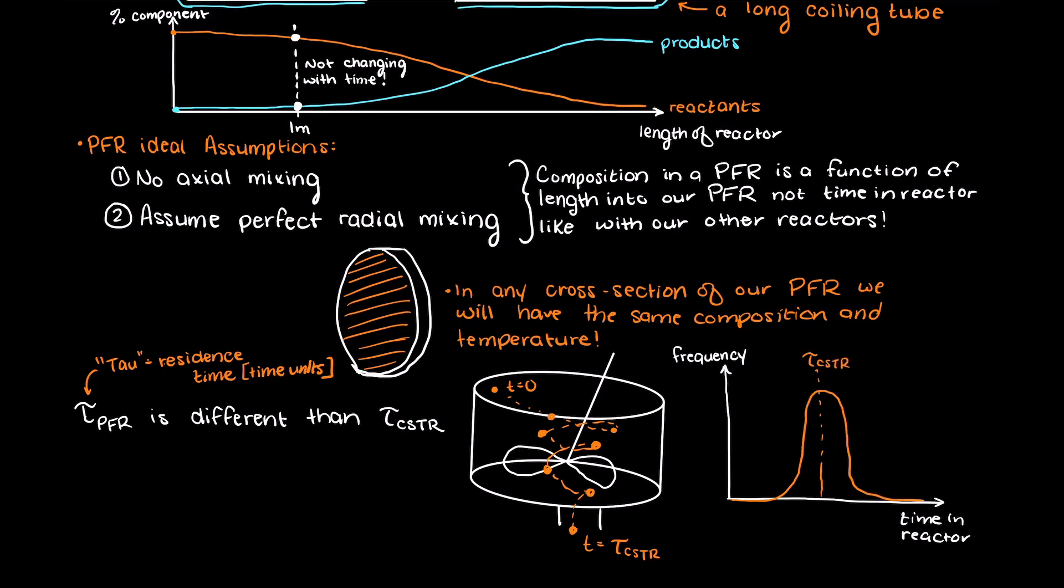It is based on the average time an average particle spends in the CSTR, whereas in a plug flow reactor we just have a single residence time, as we are assuming that the fluid is continually and always moving forward at a constant rate.